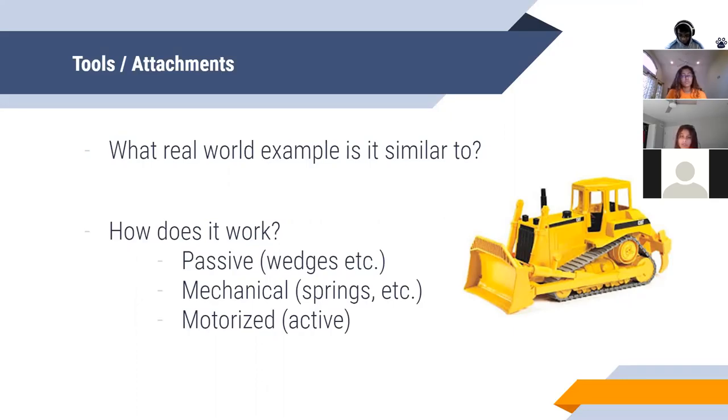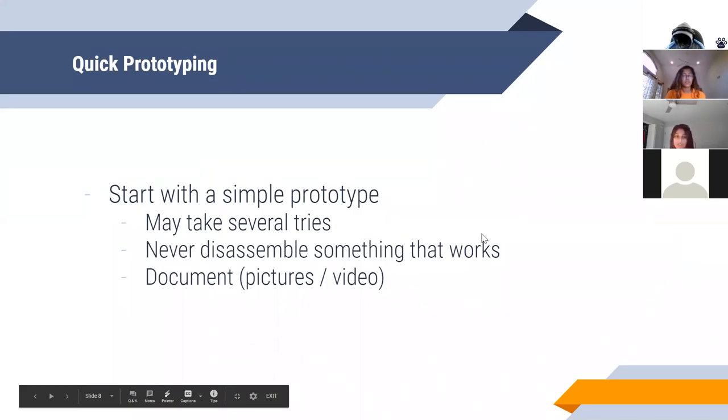Mechanical attachments are the ones that use stored energy, so that would be like rubber bands or springs. These are generally less popular because usually the designs are super advanced, but feel free to try it out. The most popular attachments are motorized attachments, which use the remaining motors on your robot other than the ones that are driving to complete missions.